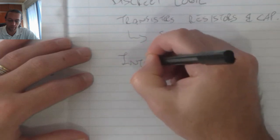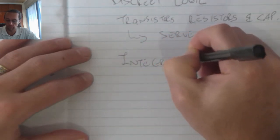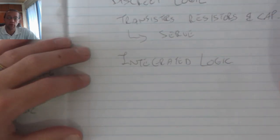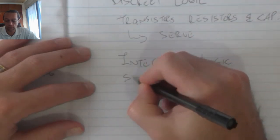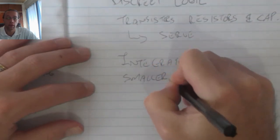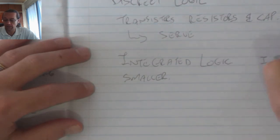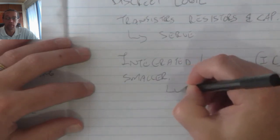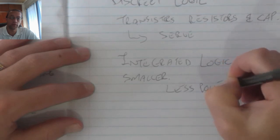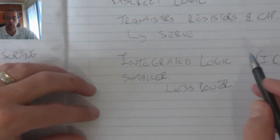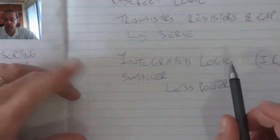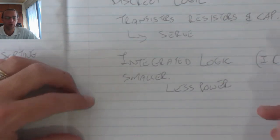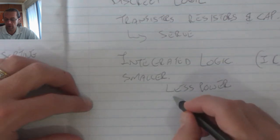Integrated logic or integrated circuits are smaller. They are IC-based. As a result, they require less power to operate because of the smaller distances between the onboard components—the transistors, resistors, and capacitors that are internal on the IC. Because they are so close together, switching times decrease.